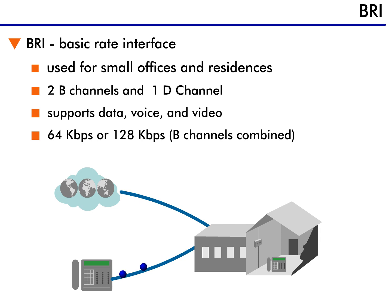For residential use, many customers use ISDN service to provide telephone and internet service, and sometimes even cable television services. When business offices use ISDN, the different channels are typically used for data and voice. Additionally, many corporations use ISDN service for video conferencing services.